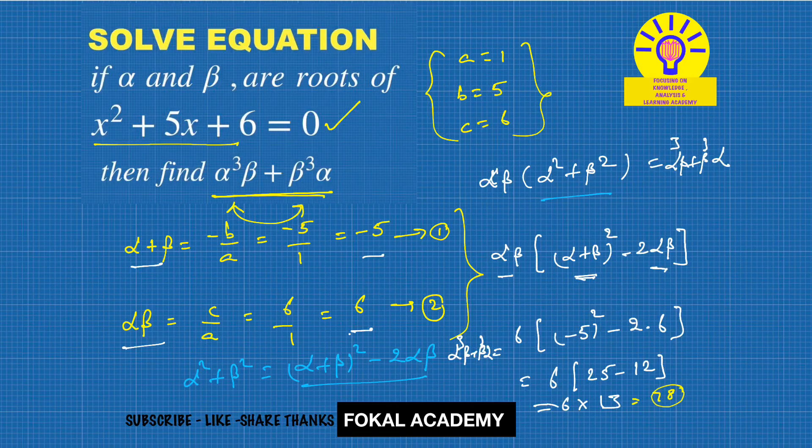So α³β + β³α equals 78. This is the answer for the given problem and this is the process of simplification.